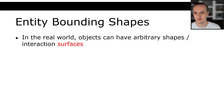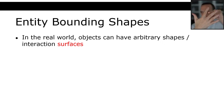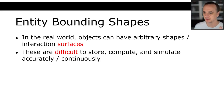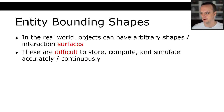Before we get into that math, I want to talk about entity bounding shapes. In the real world, objects can have arbitrary shapes and interaction surfaces. These are pretty difficult to store, compute, and simulate accurately and continuously. There are game engines out there with really great skeleton physics that could detect something like a bullet going through fingers, but we are not going anywhere near that level of difficulty in this course. That problem is very difficult — taking a real-world complex shape and simulating the physics of that.